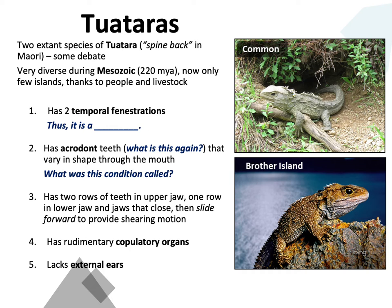What are some characteristics of tuataras? They have two temporal fenestrations, which makes them a diapsid — they're the classic example of an ancestral diapsid with two large temporal fenestrations behind their eye. They have teeth that are acrodont, meaning the teeth are attached to the edge of the bone with no root and no tooth socket like mammalian teeth.